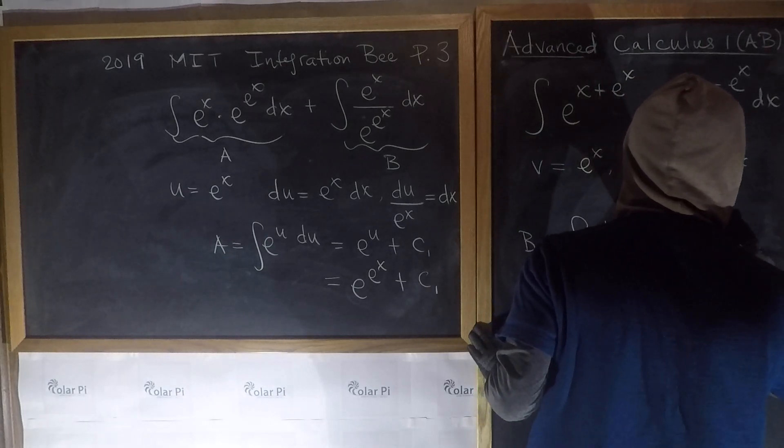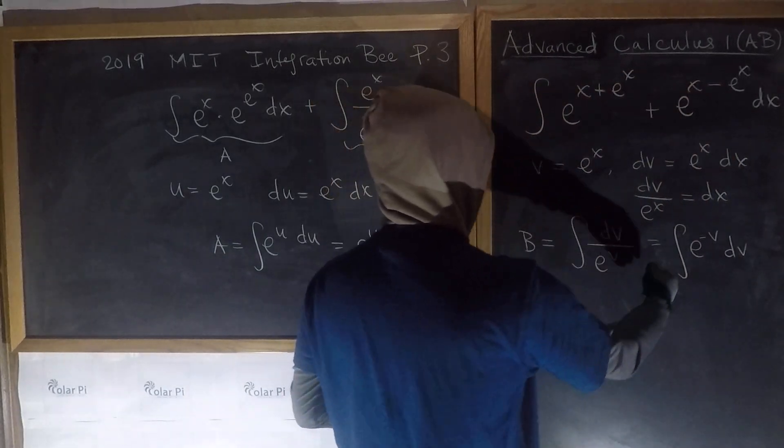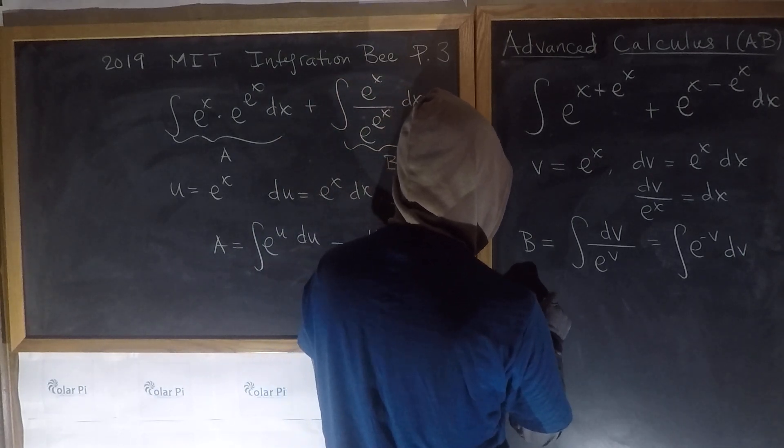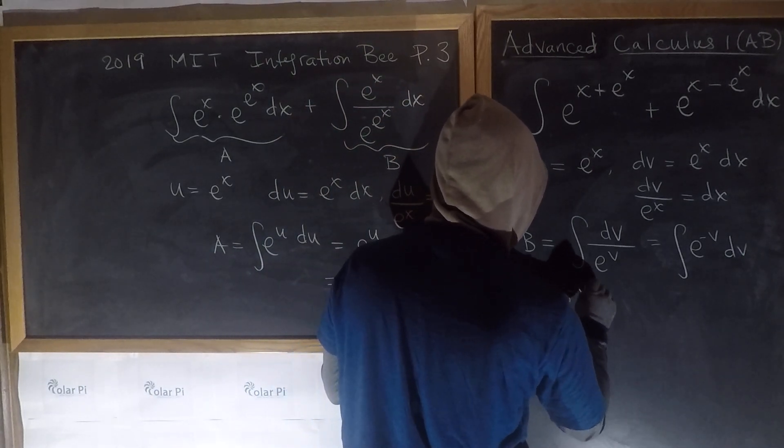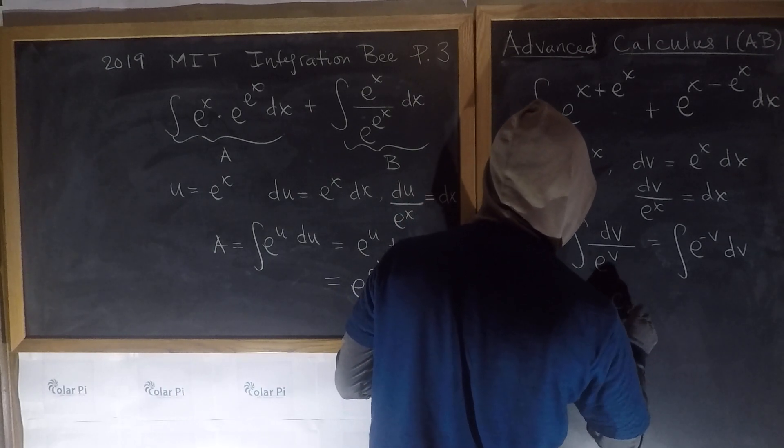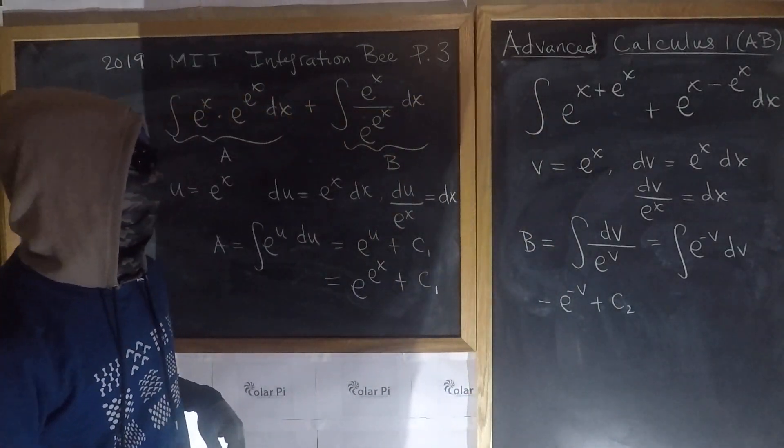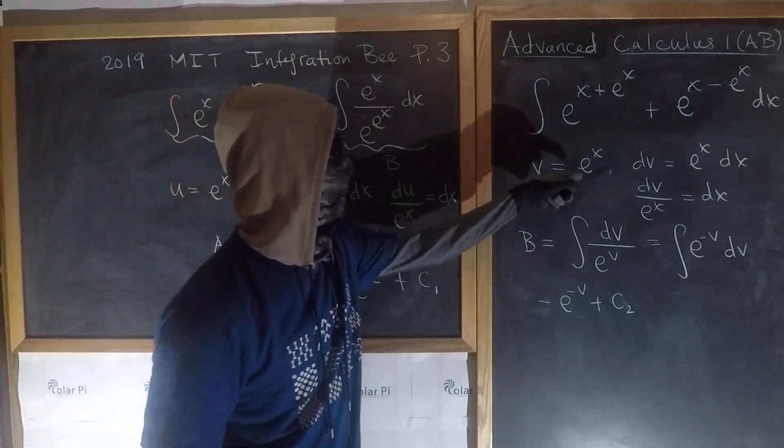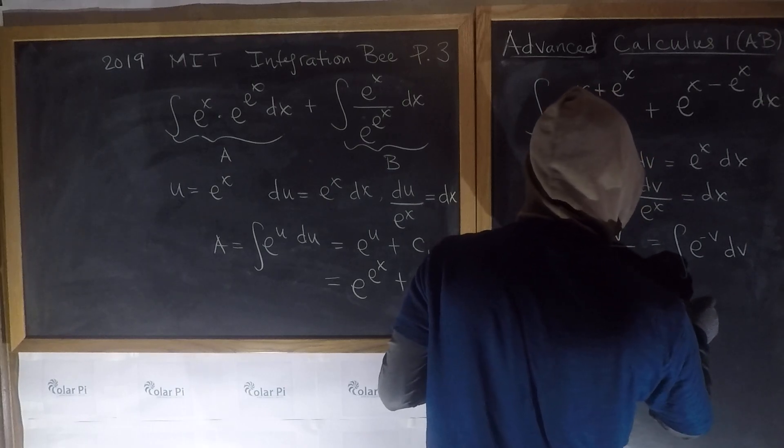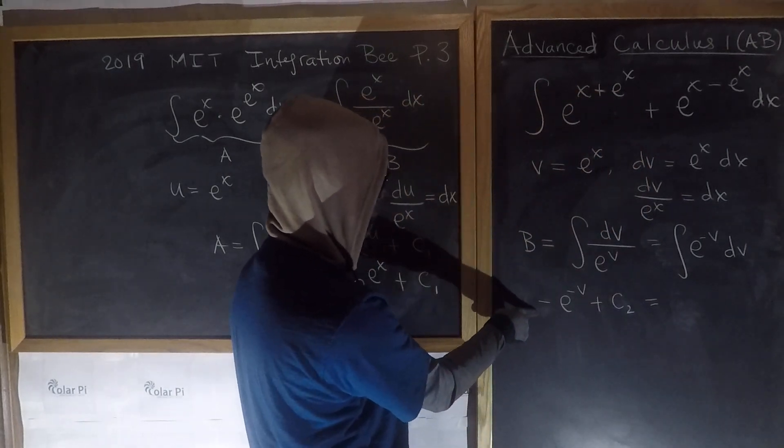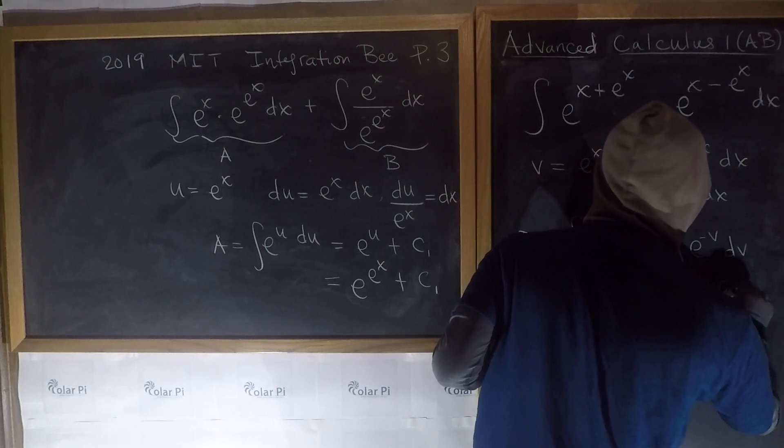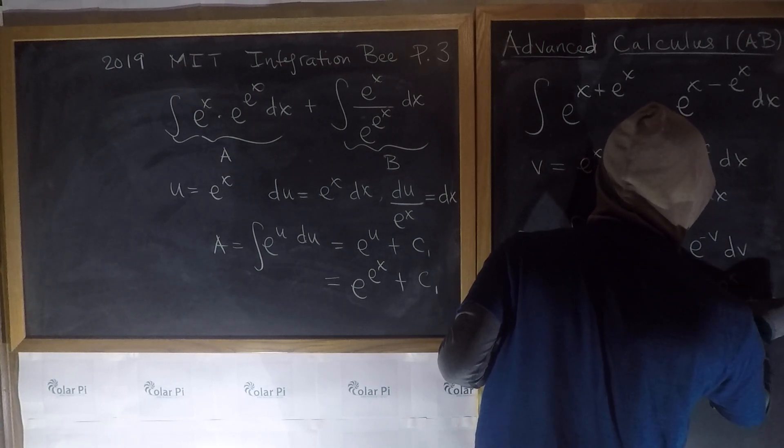But wait, what's the anti-derivative of e to the negative v dV? It's going to be negative e to the negative v and then plus c2 this time. C2. Now, what's v? V is e to the x. So, our final answer is actually e to the, well, no, I have this negative, right? It's negative e to the negative e to the x plus c2.